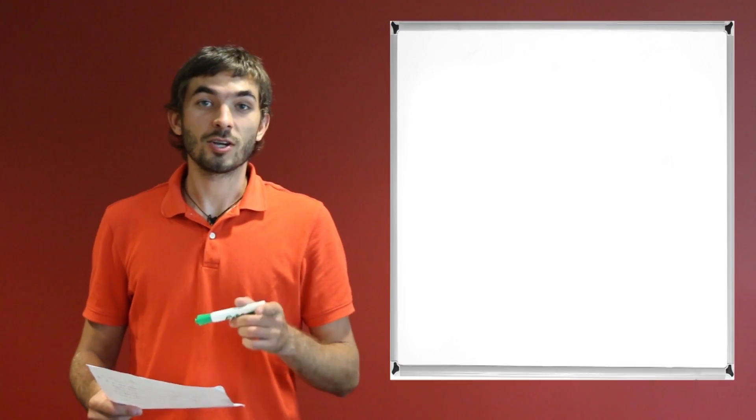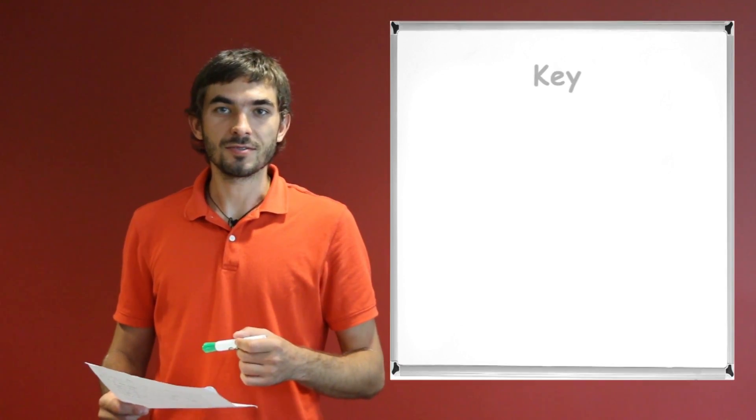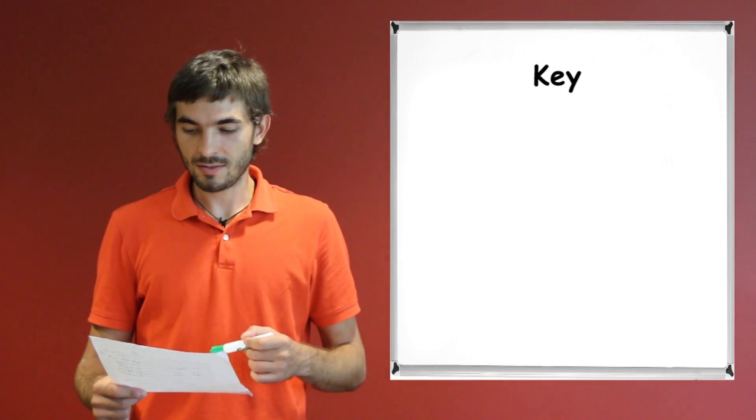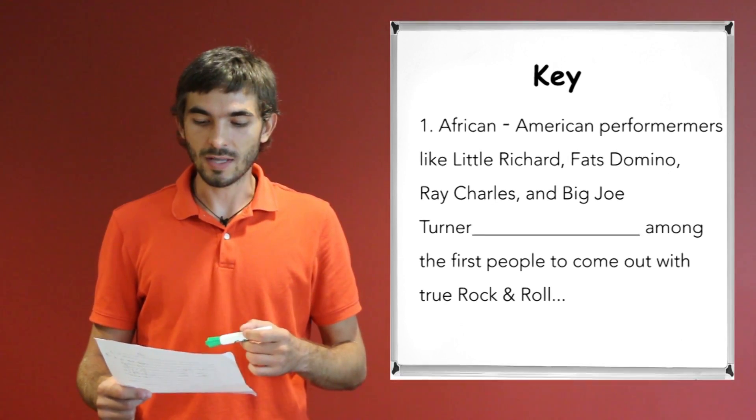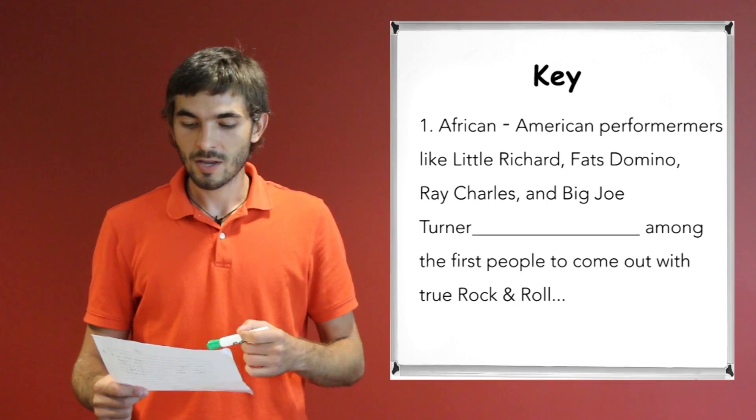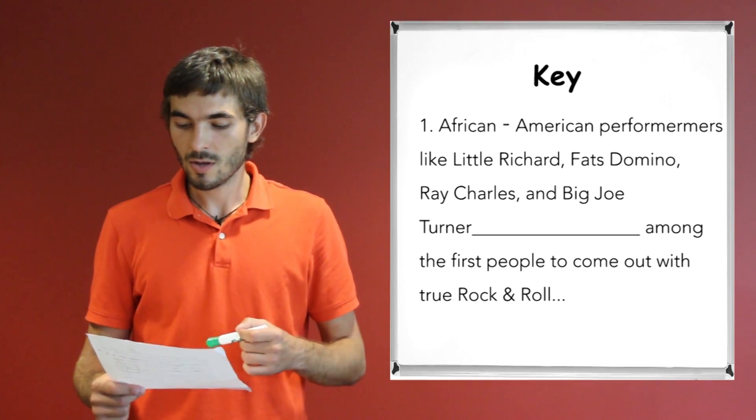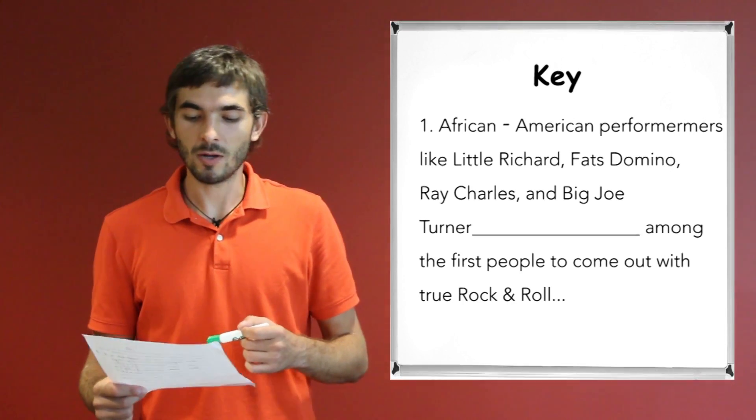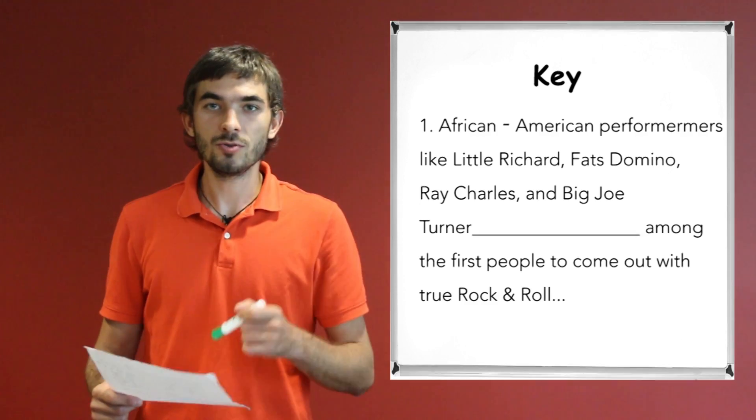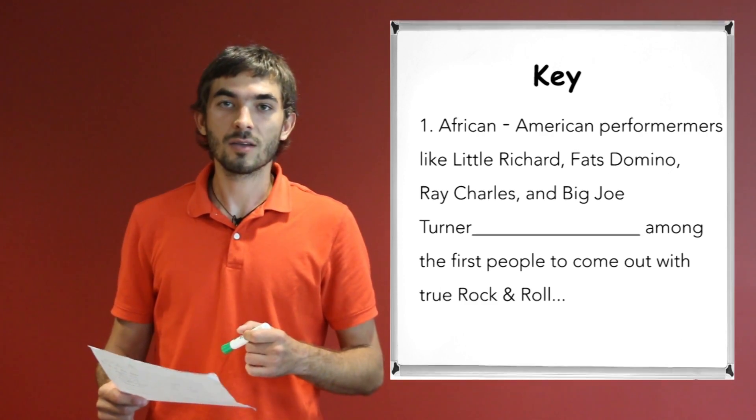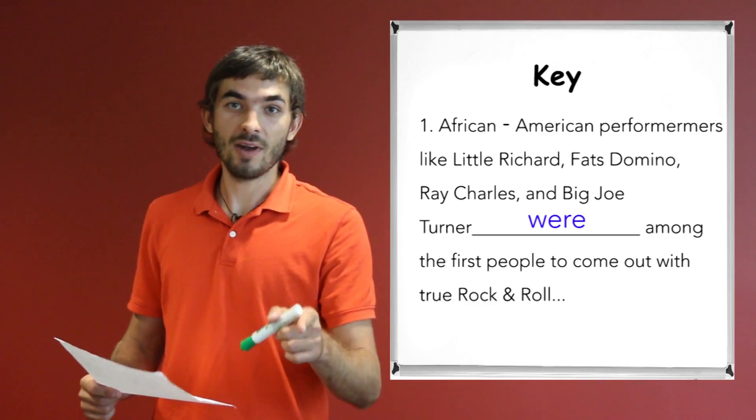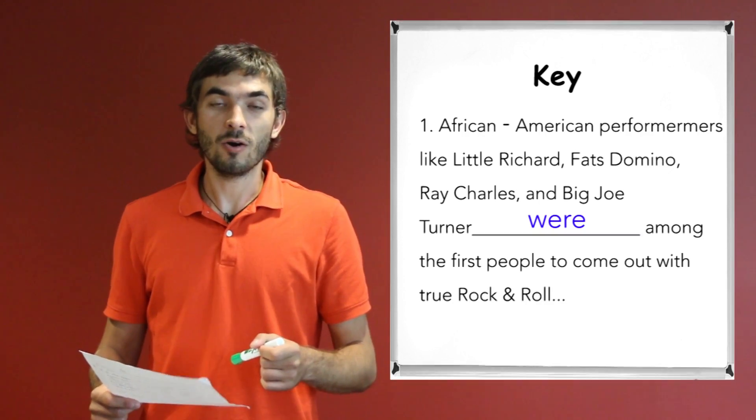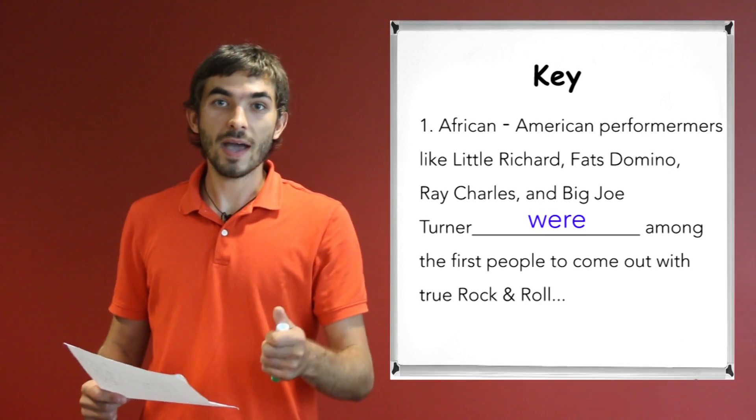Alright guys, good job. Let's see your answers. The first sentence was, African-American performers like Little Richard, Fats Domino, Ray Charles and Big Joe Turner were among the first people to come out with true rock and roll. So what do you have for the blank? Verb 'were', yeah, that's correct. Is it regular verb or irregular verb? Irregular, correct.